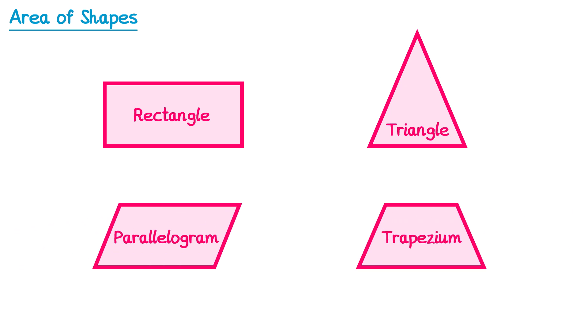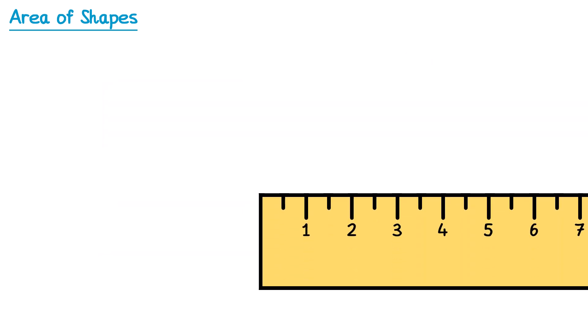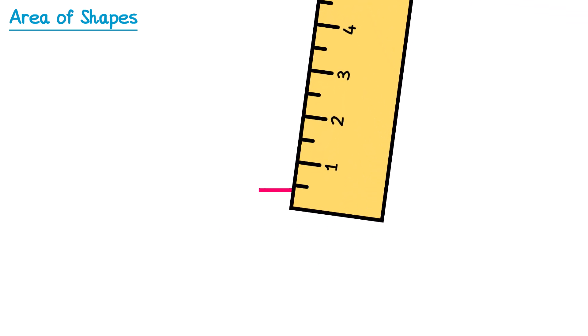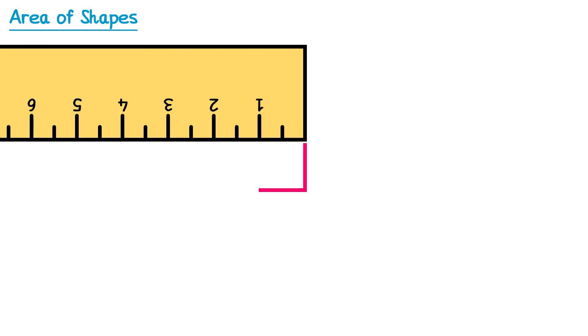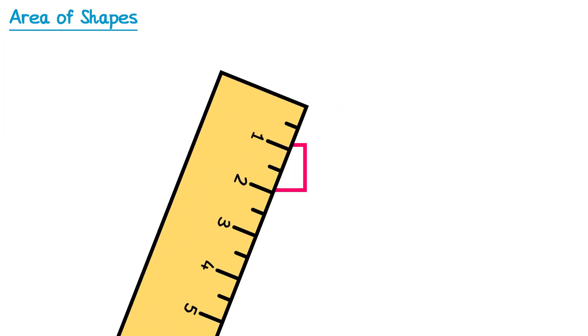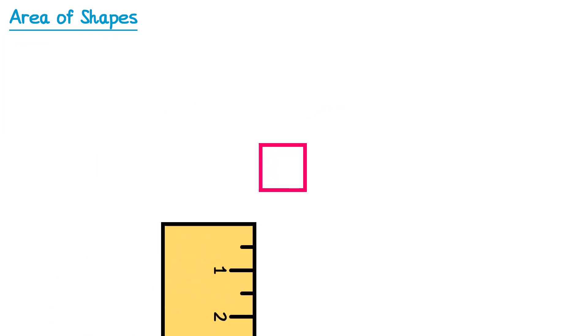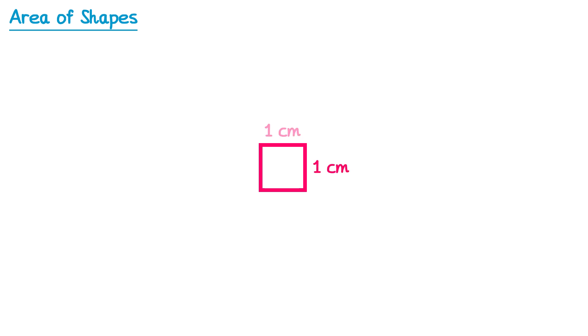Before we do this, it's important to understand what we mean by the word area. If we take a ruler and draw a line that's 1cm long, and then on the end of this a line that's 1cm tall, and then continue to draw these 1cm lines until we have a square, this square will be 1cm tall and 1cm wide, so we call it a square centimetre, and its area is 1cm squared. This is the unit we use for measuring area.